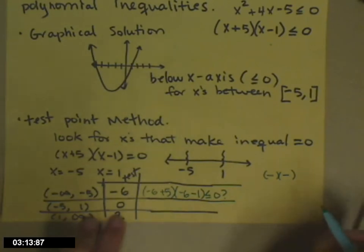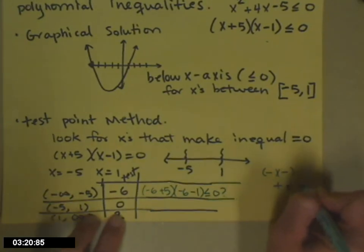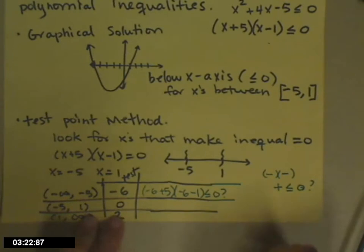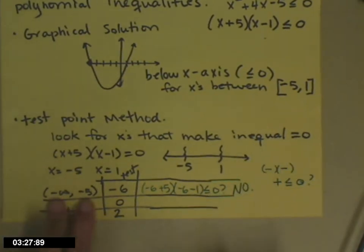Notice I'm just writing the negative symbols. I don't really care what the number is, I just care what the sign is. Negative times negative is positive. Is a positive number less than or equal to zero? It is not. So this interval is not part of my solution set.